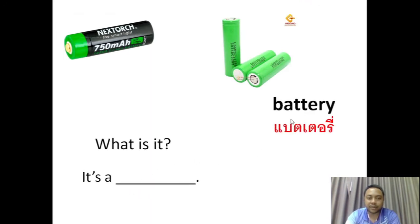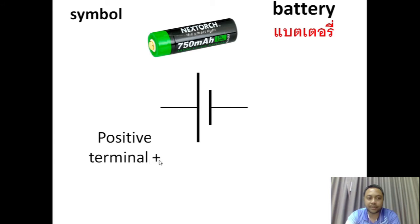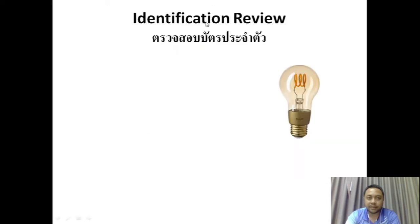What is it? It's a battery. The symbol of the battery is this one. In this area it is called the positive terminal, and in this area it is called the negative terminal. So the positive terminal is this one and the negative terminal is this one — identified by the plus and minus signs.